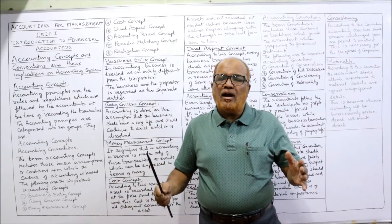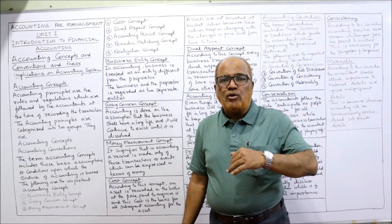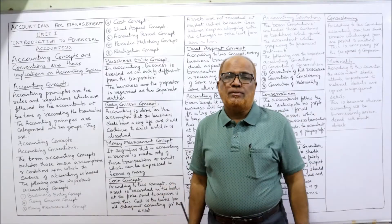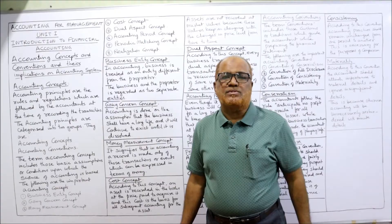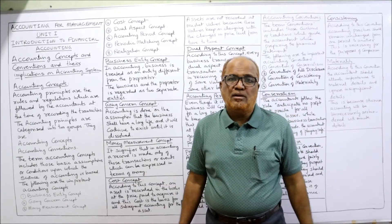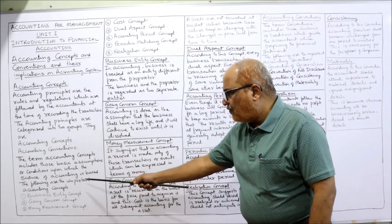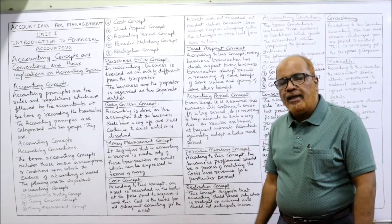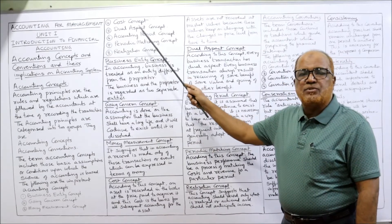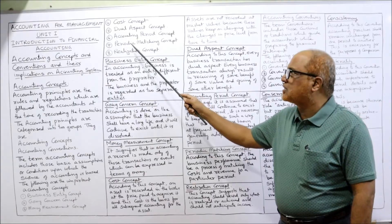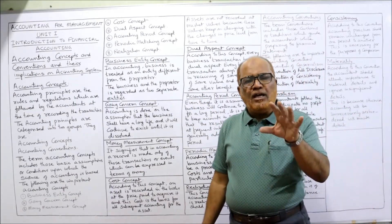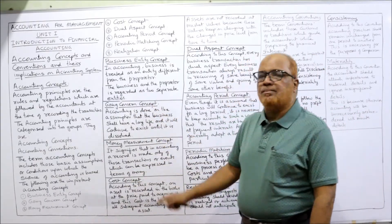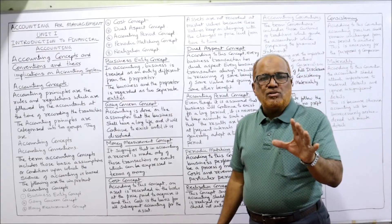Every accountant must follow accounting concepts and it is not required to be disclosed. It is understood that every accountant is following accounting concepts. If an accountant does not follow them, they must mention it; otherwise there is no need to disclose it. The following are the important accounting concepts: business entity concept, going concern concept, money measurement concept, cost concept, dual aspect concept, accounting period concept, periodic matching concept, and realization concept.